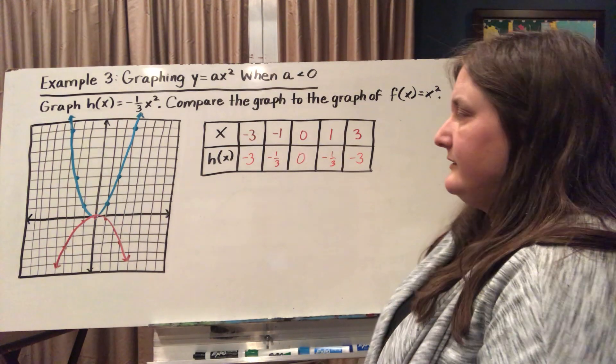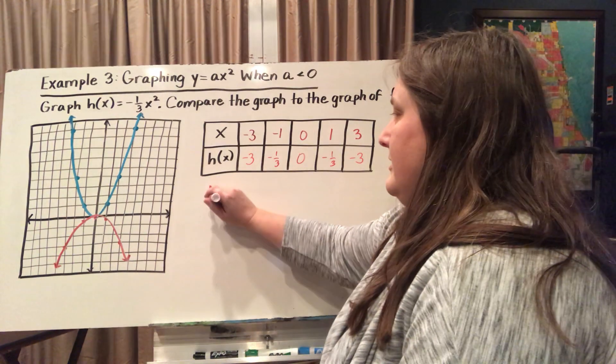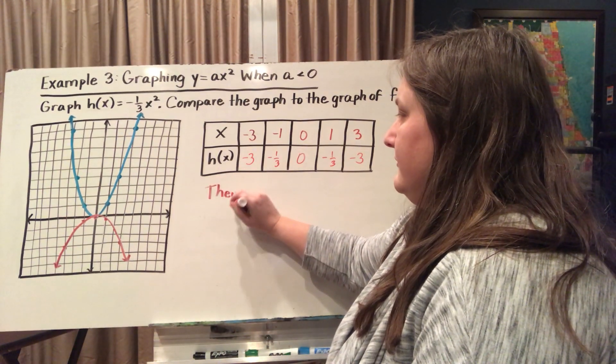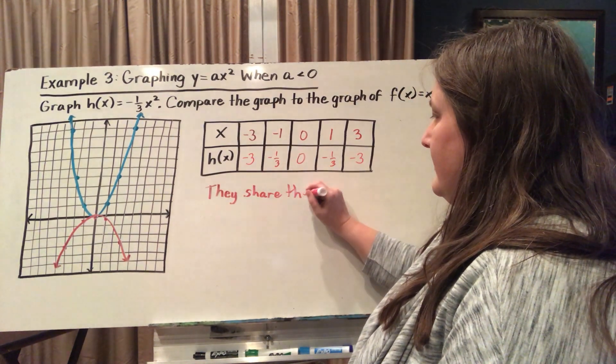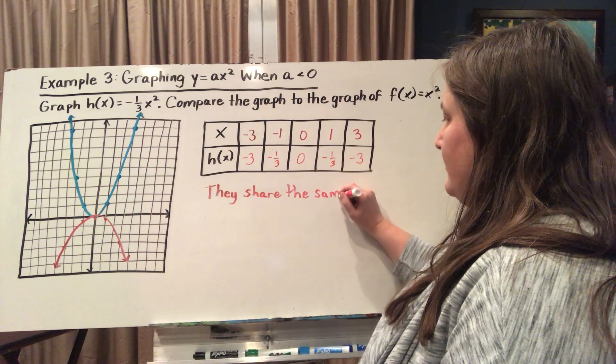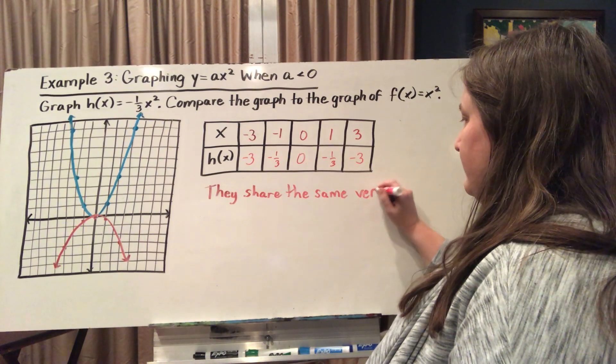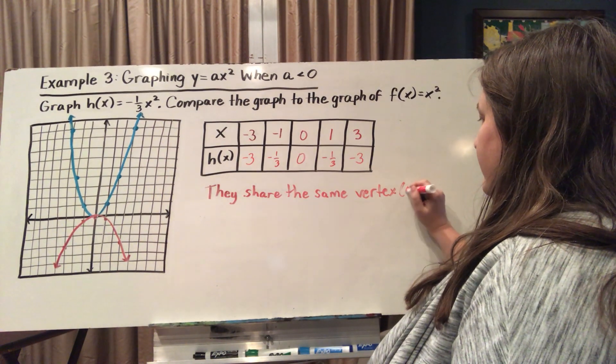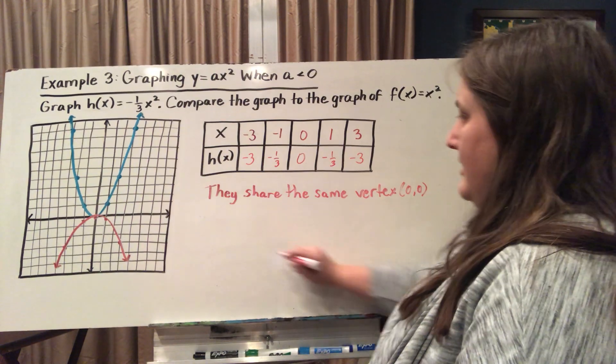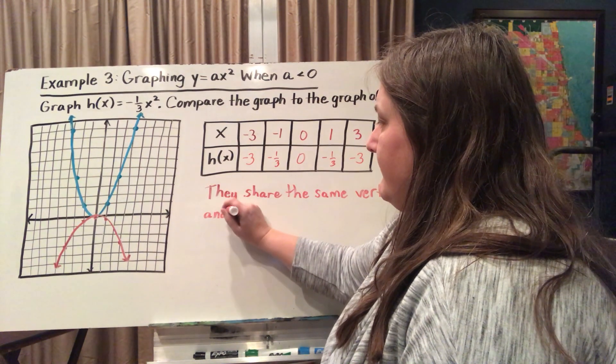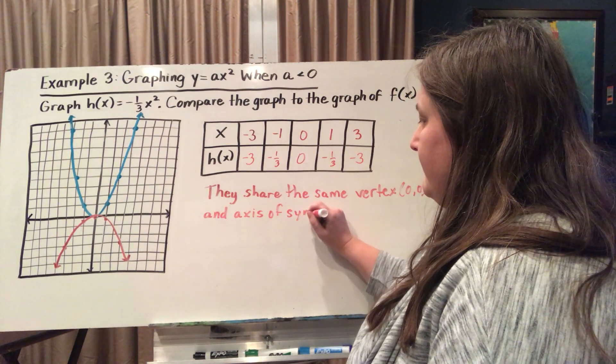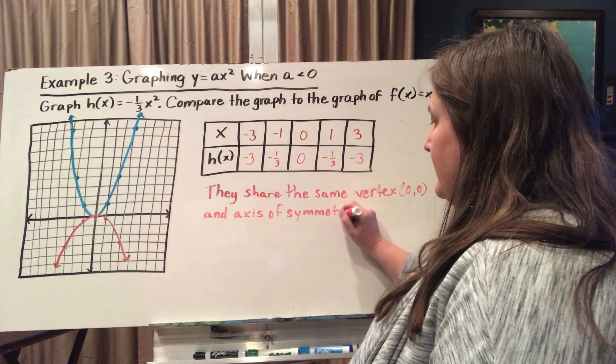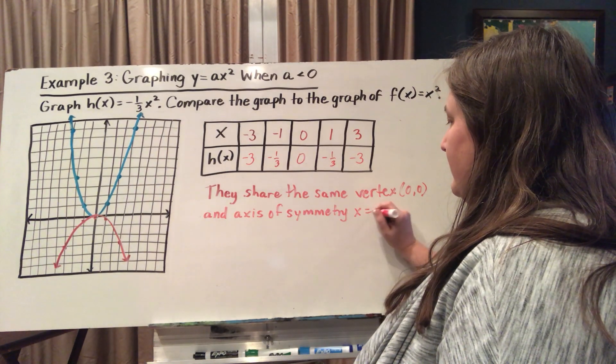And once again, I see that they share the same vertex, which is, again, in this case, 0, 0, and the same axis of symmetry, which is at x equals 0.